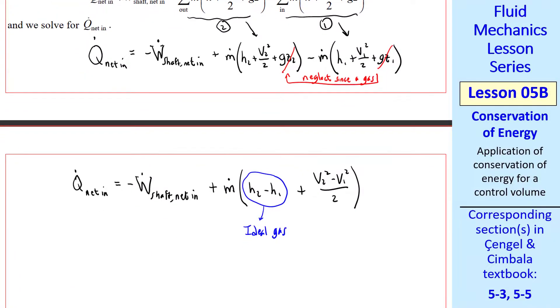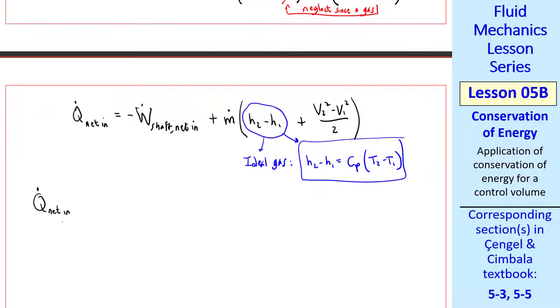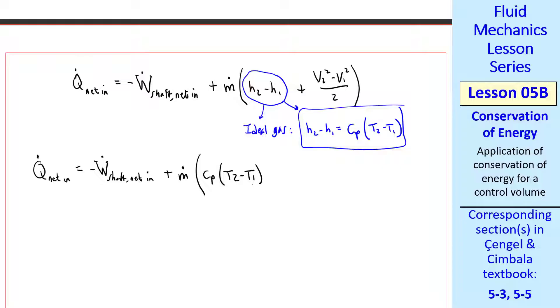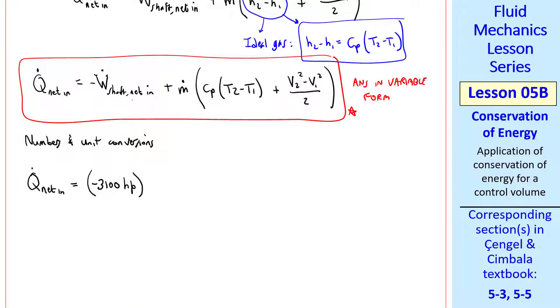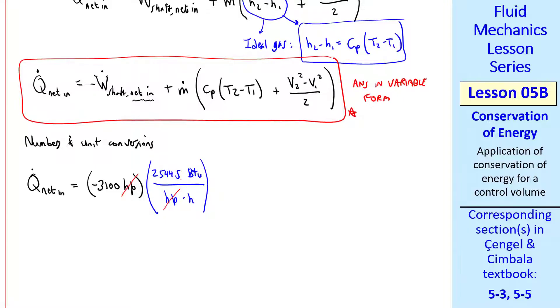The fluid here is air, which is an ideal gas. So from thermo, we know that h₂ - h₁ is c_p times (T₂ - T₁), where c_p is the specific heat at constant pressure. So the final form of our equation is Q̇_net_in equals negative Ẇ_shaft_net_in plus ṁ times the quantity c_p(T₂ - T₁) + (V₂² - V₁²)/2. This is our answer in variable form. Now we plug in our numbers and unit conversions. We also have to worry about negative signs.